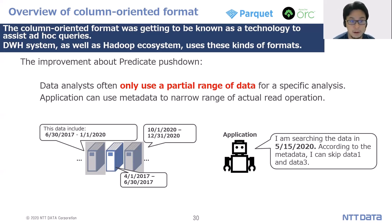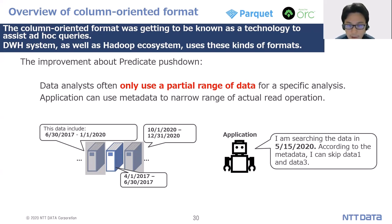Next, I talk about the improvement of predicate pushdown. Data analysis often uses only a partial range of data for specific analysis. Applications can use metadata to narrow the range of actual read operations. In this example, data is sorted by date. If we want to search data created on a certain date, we can skip data 1 and data 3, reading only the targeted second data.